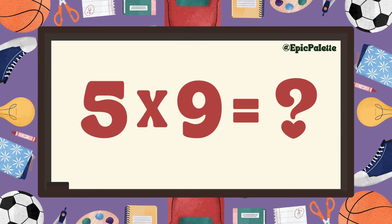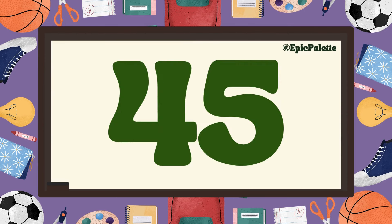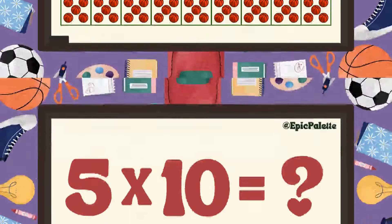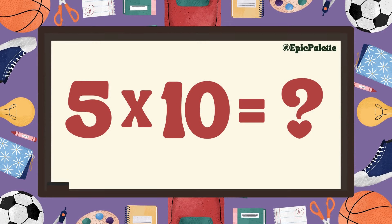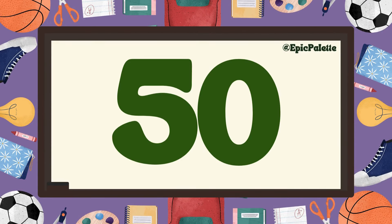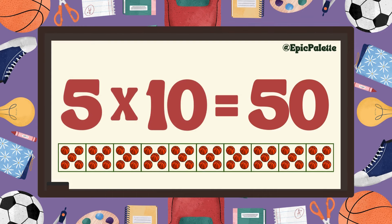5 times 9 equals... 45. That's right. 5 times 9 equals 45. Great job. 5 times 10 equals... 50. That's right. 5 times 10 equals 50. Yay!